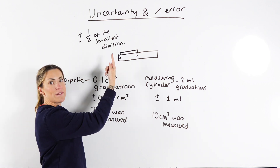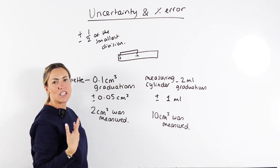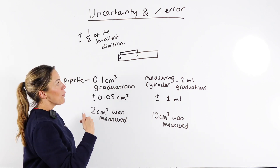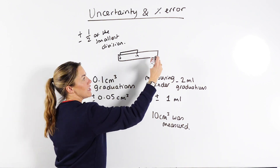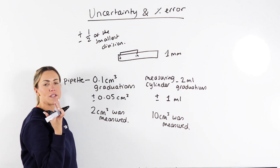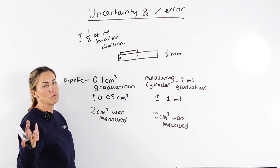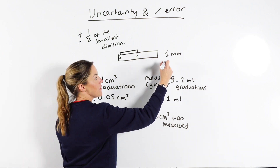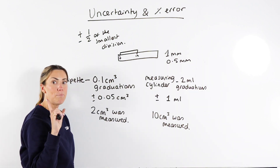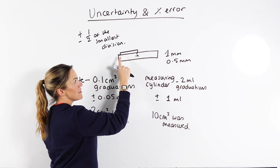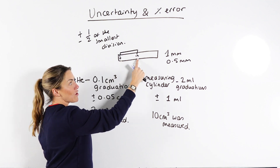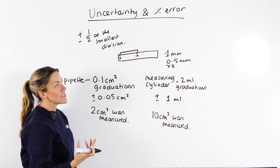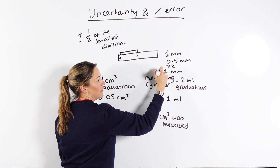You have the uncertainty where you lined up the zero at one end, and the uncertainty where you read off the measurement of your object at the other end, so we need to add the uncertainties together. With a typical ruler the smallest division is usually one millimeter. The uncertainty is plus or minus half of the smallest division, so that's 0.5 millimeters, but we need to multiply it by two because we've got that uncertainty at both judgments. So the uncertainty of the ruler is actually one millimeter.